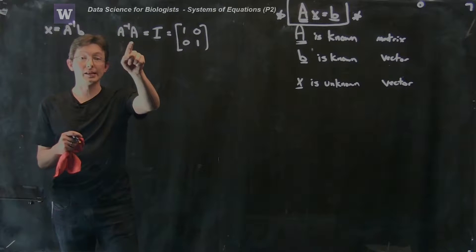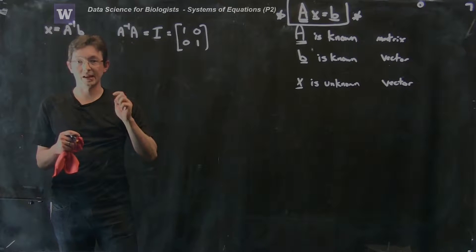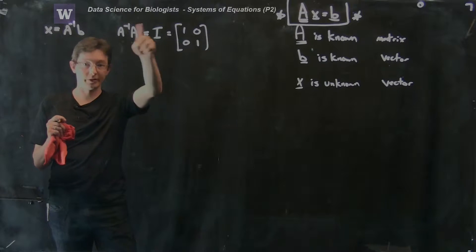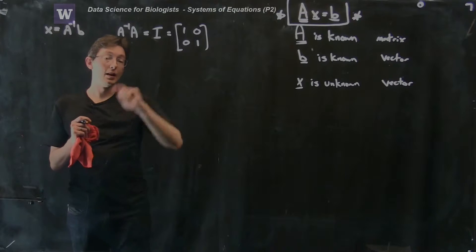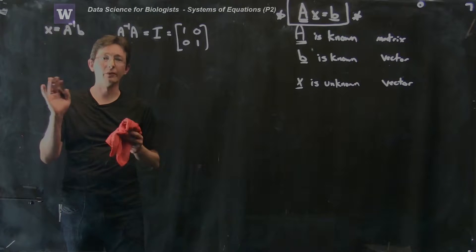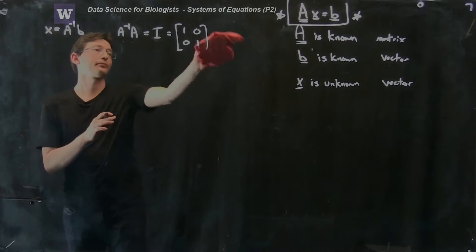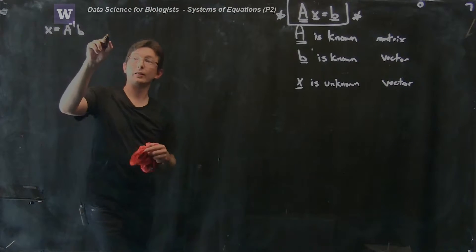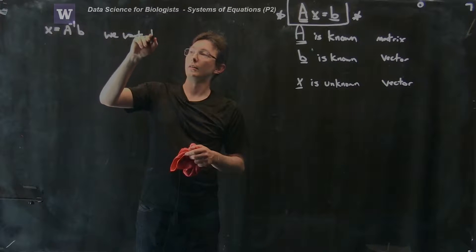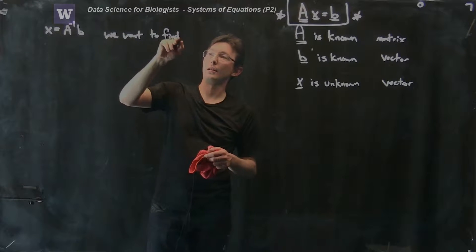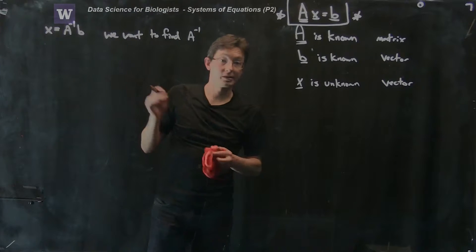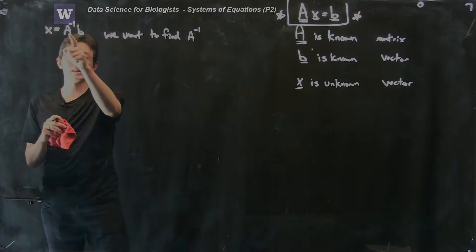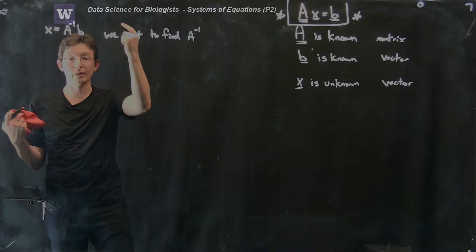This inverse doesn't exist for all possible matrices A, but let's just assume for now that there is an inverse and it does exist, such that if I multiply A inverse times A, I get this identity. Sometimes A inverse won't exist — we'll talk about that later. What we would really like to do is find A inverse, because if we can find A inverse, we can solve this equation over and over again for lots of different B vectors.